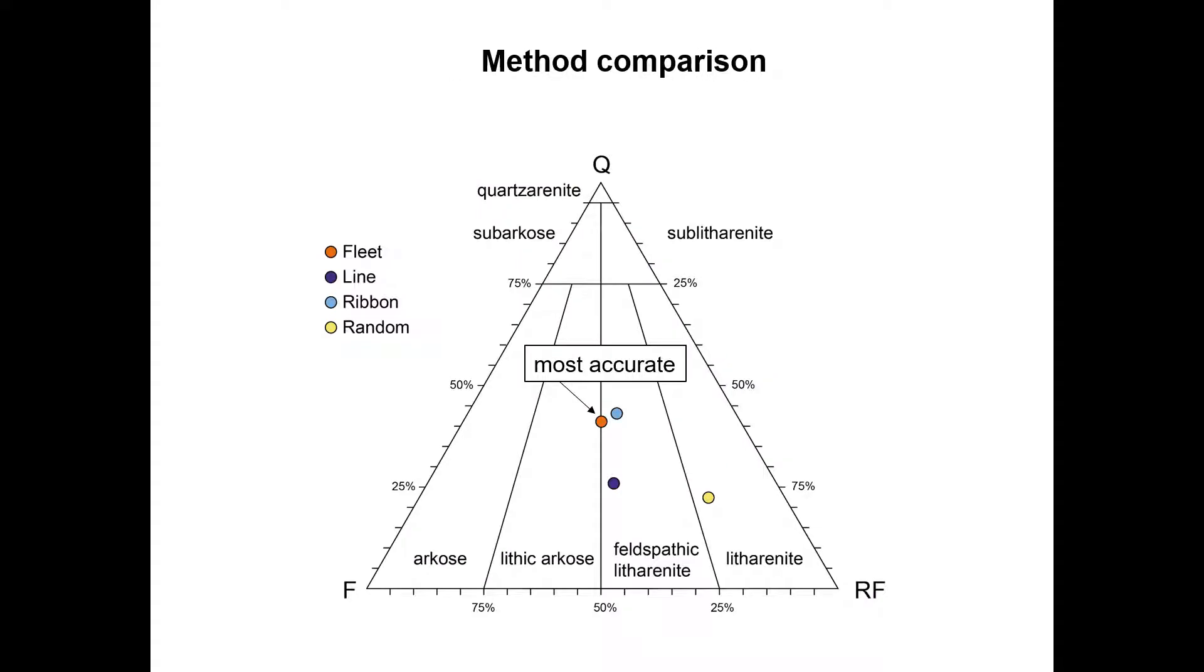If we compare the results from this example, we see that the point counting results scatter quite a bit in the ternary plot. From my experience, the ribbon counting method is a good compromise between accuracy and time spent.